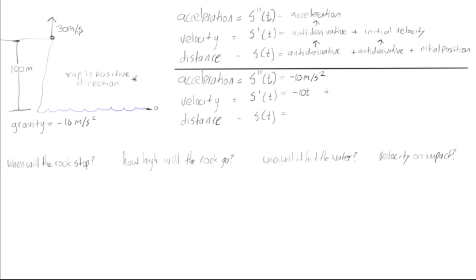So the initial velocity is positive 30 meters per second. So we'll just add that in. That's plus 30. We can put in units meters per second.